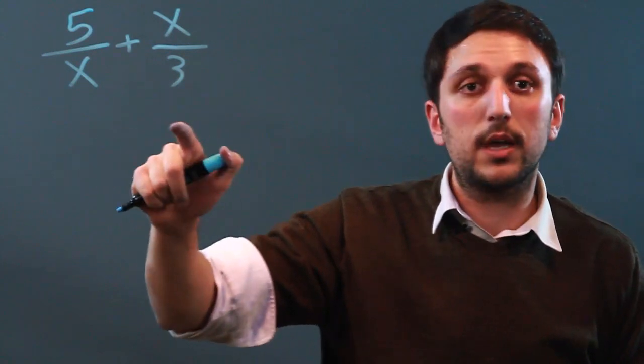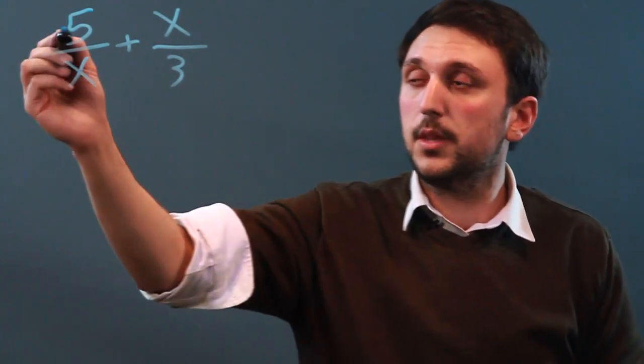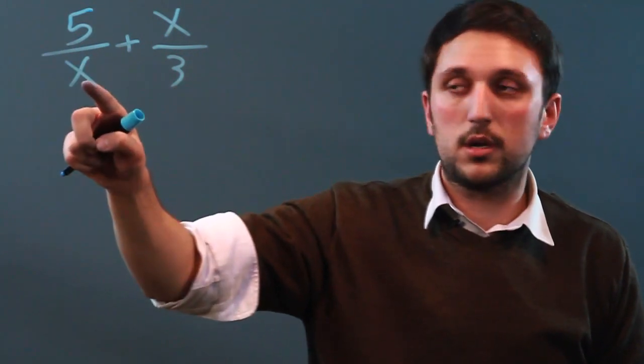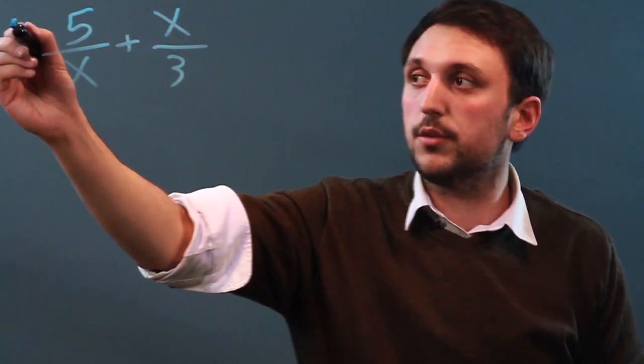So instead what we have to do is find the lowest common denominator. The way we do that is we want there to be a 3 over here and we want there to be an x over here, so we multiply by the reciprocal.